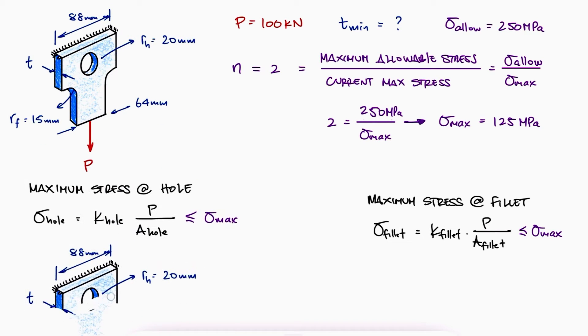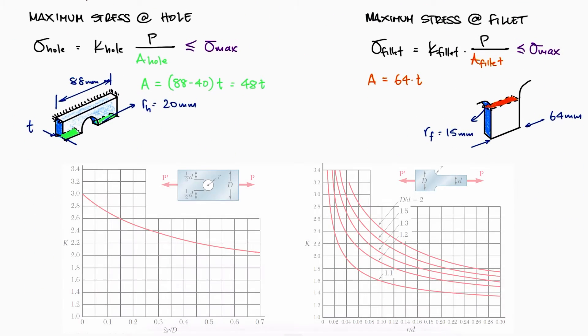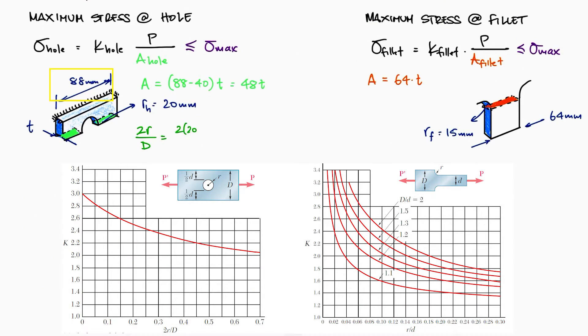At the hole, the area should be 88 minus the diameter of the hole times the thickness of the plate. At the fillet, the area would be 64 times the thickness of the plate.